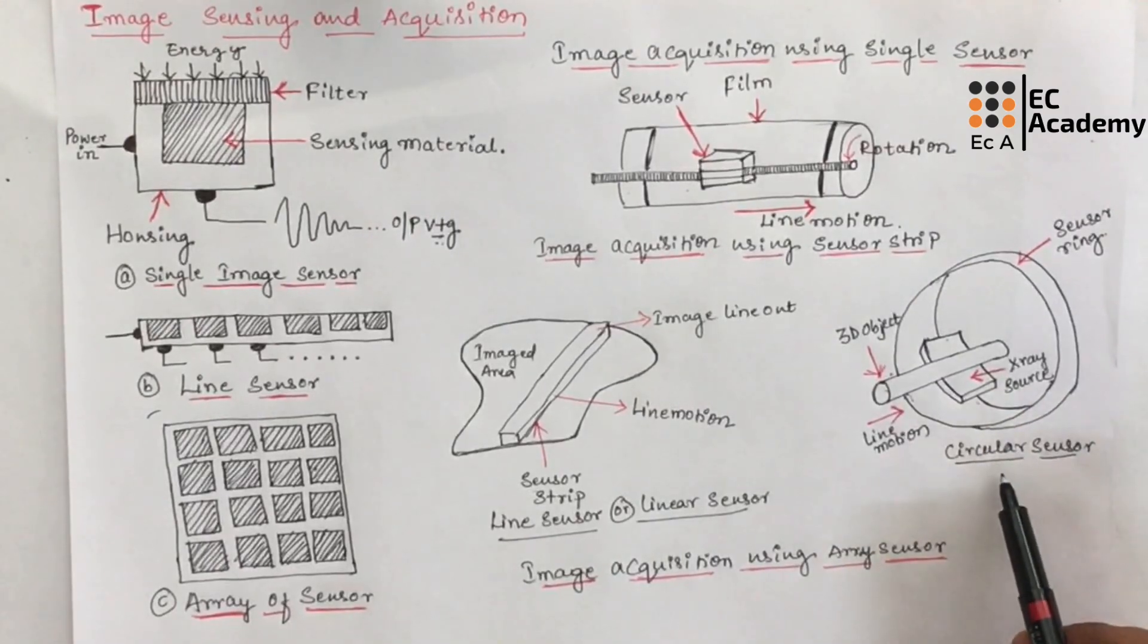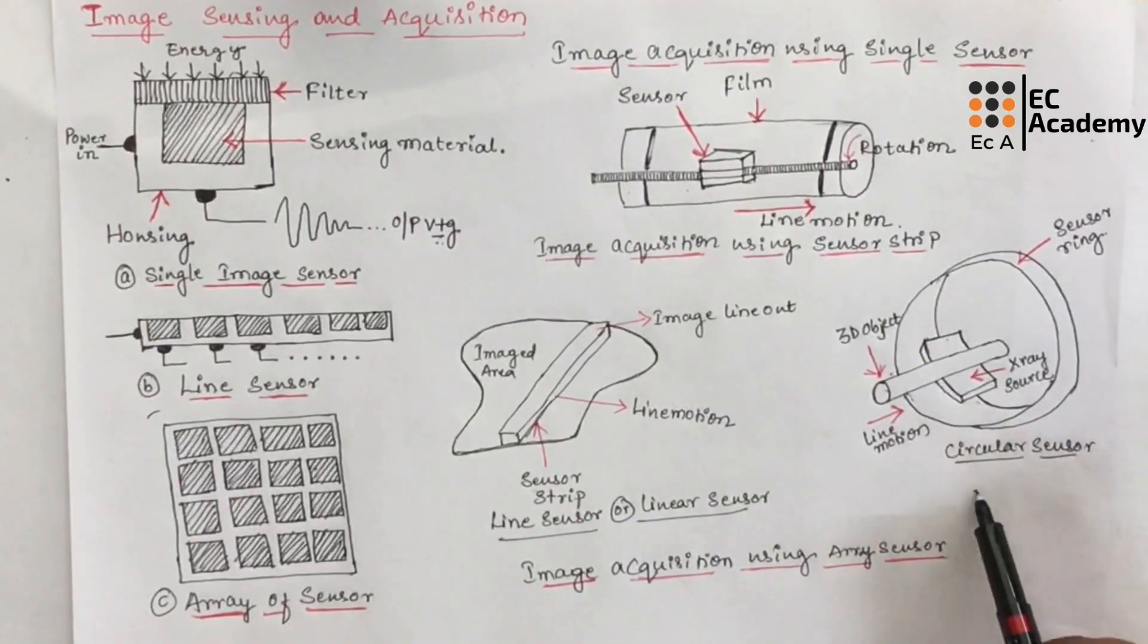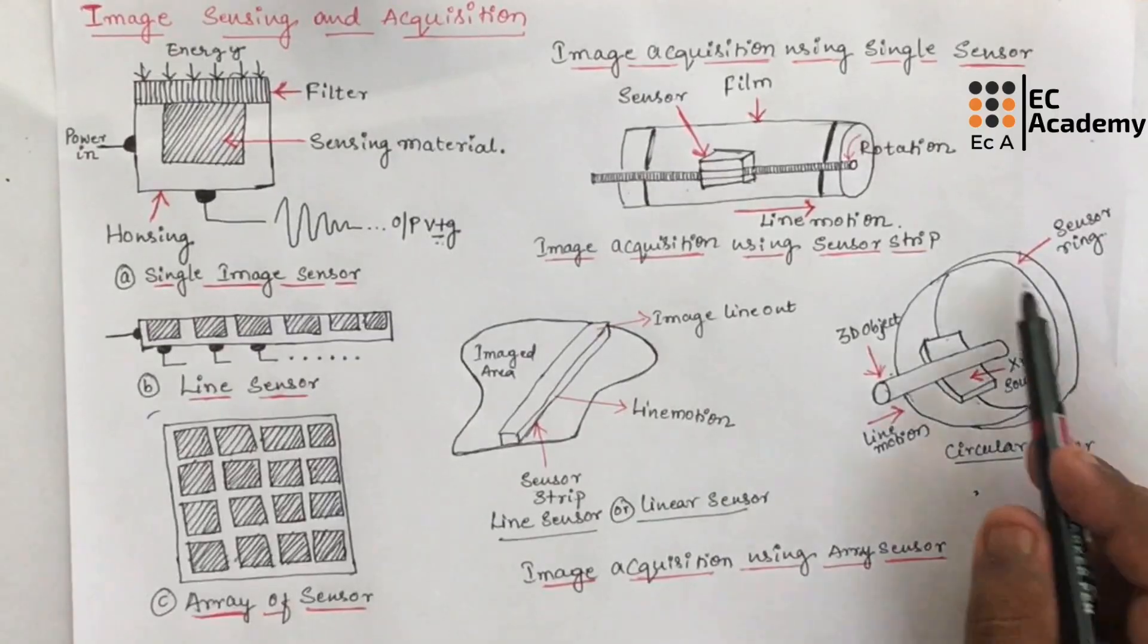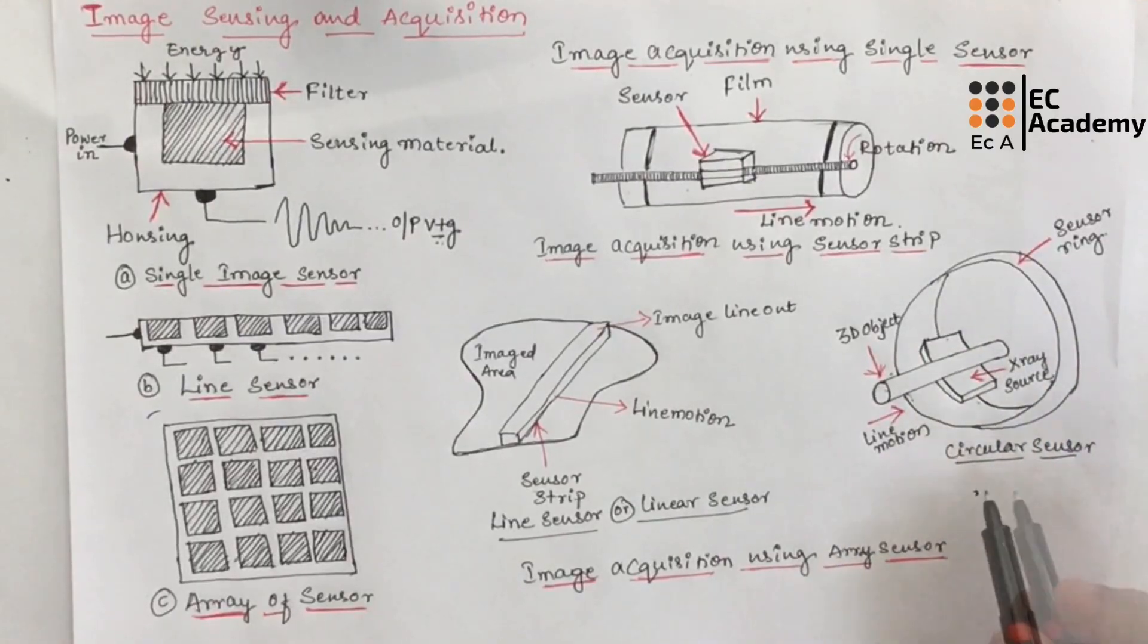X-ray is the source that provides illumination and the sensor opposite to the source clocks the energy pass through the object. Example of circular sensors can be an X-ray.